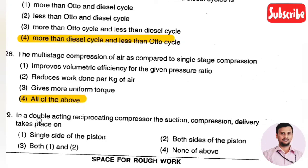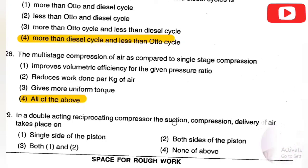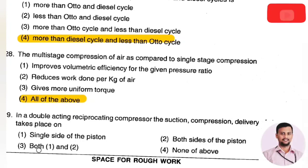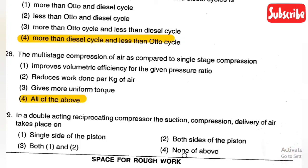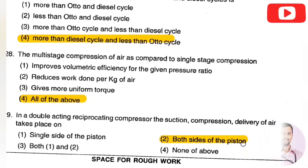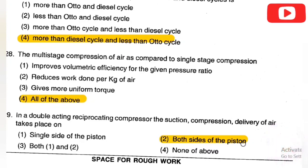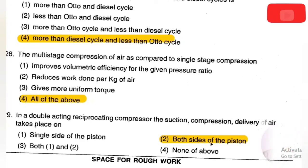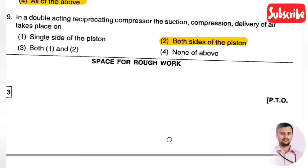The next question: in a double-acting reciprocating compressor, the suction, compression, and delivery of air takes place on — Option 1: single side of a piston, Option 2: both sides of a piston, Option 3: both one and two, Option 4: none of the above. The right answer is Option 2, both sides of a piston. In double-acting, the compressor works at both ends, taking in and delivering air from both sides.